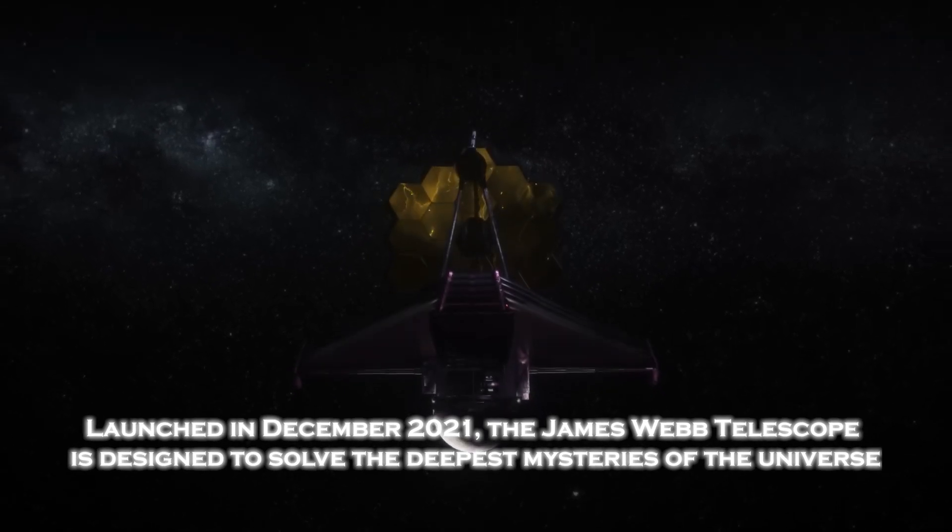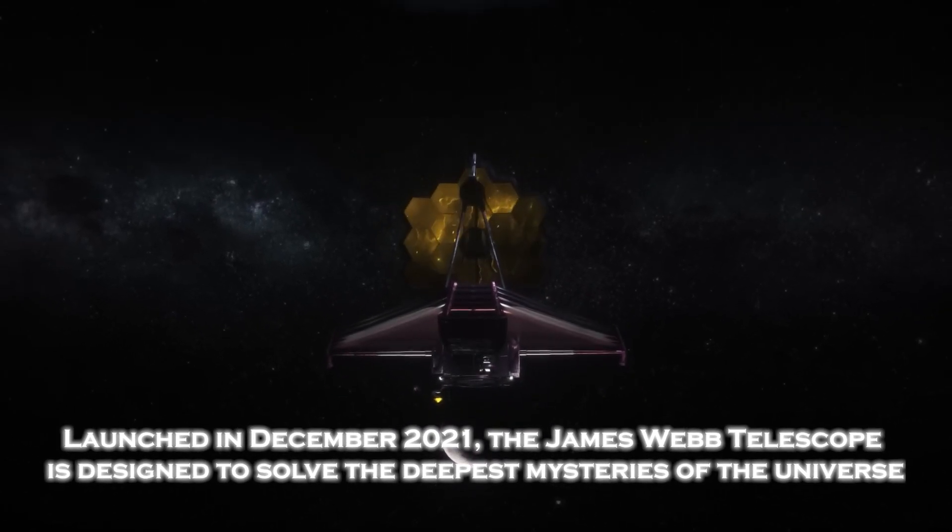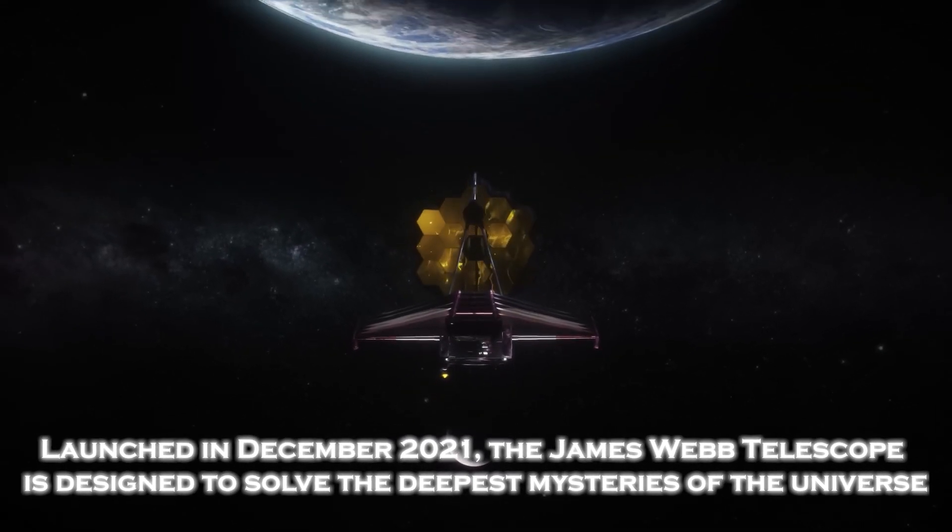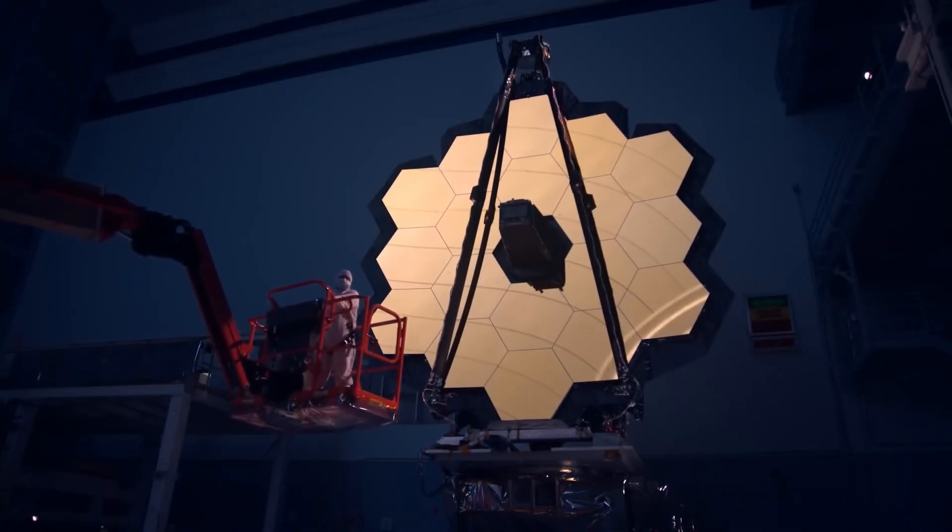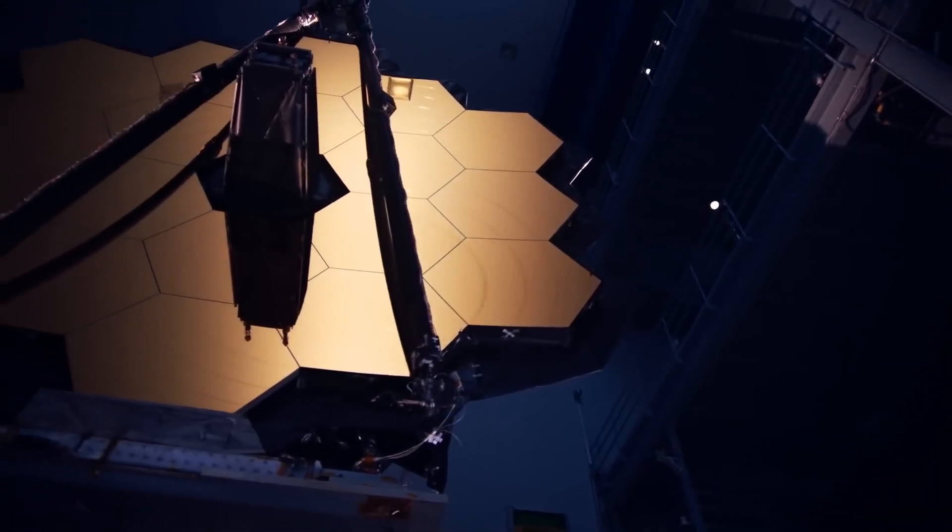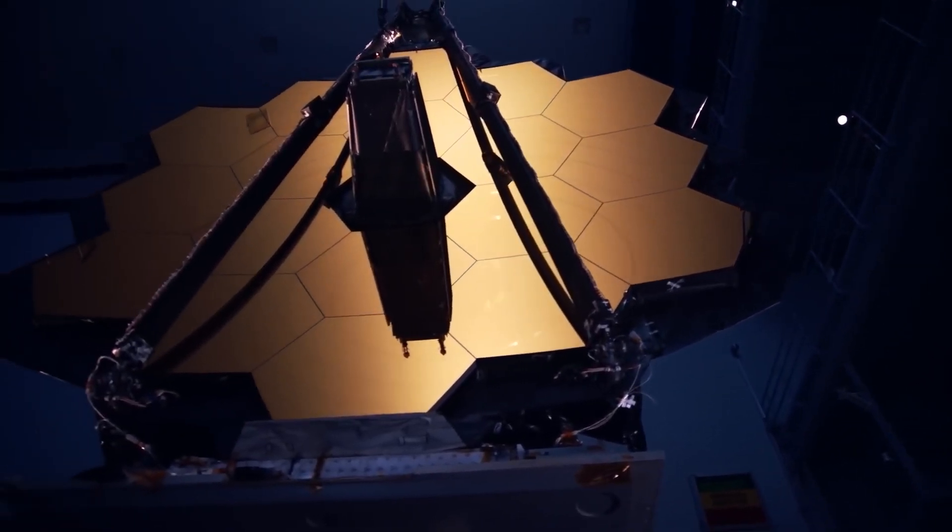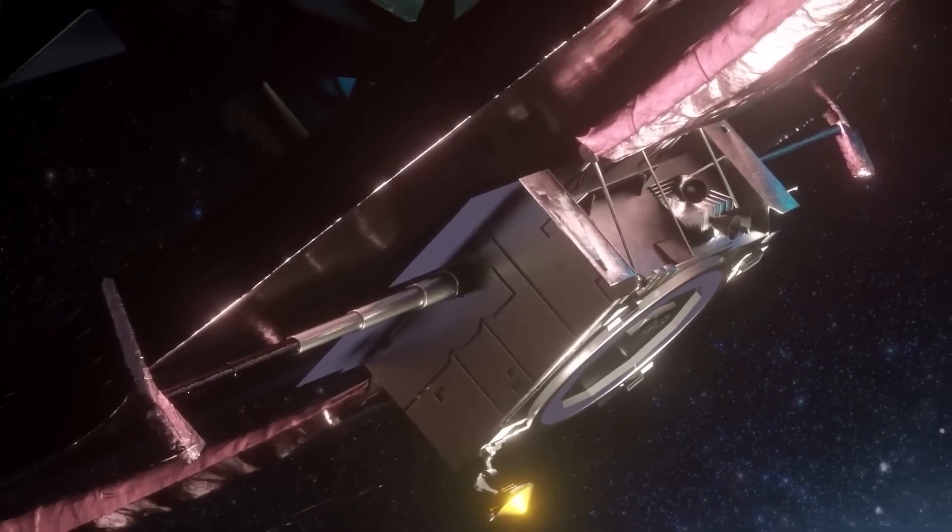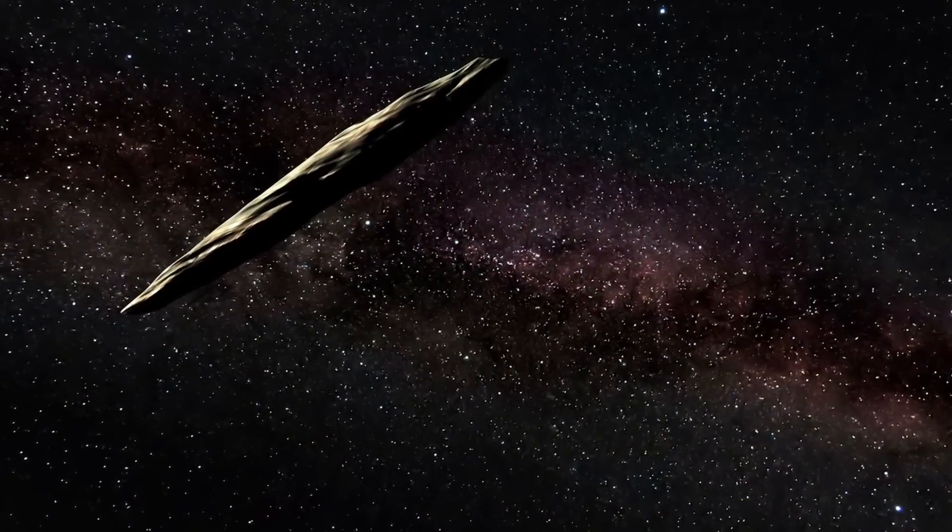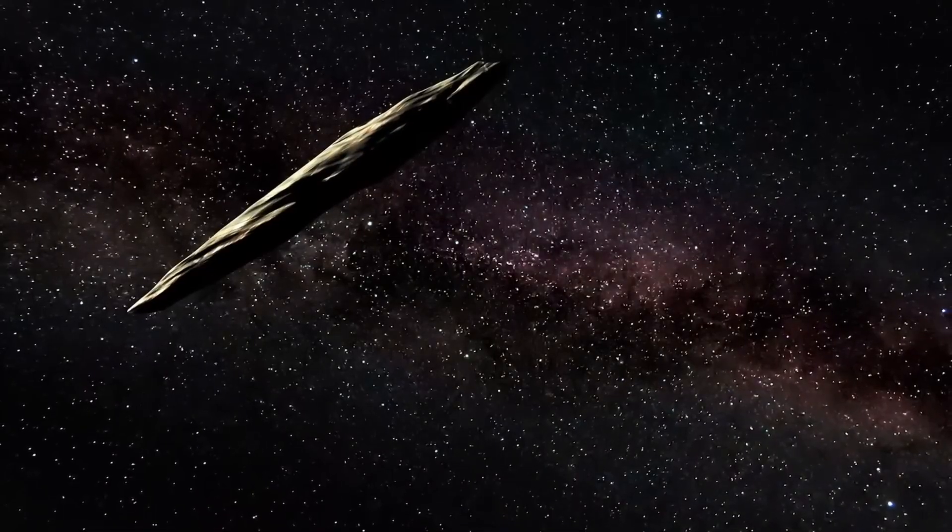Launched in December 2021, the James Webb Telescope is designed to solve the deepest mysteries of the universe. Its ability to observe the infrared spectrum allows it to capture details impossible for other telescopes. When Webb turned its gaze toward Oumuamua, now much further from our solar system, it captured something incredible: the first real image of this mysterious interstellar object.